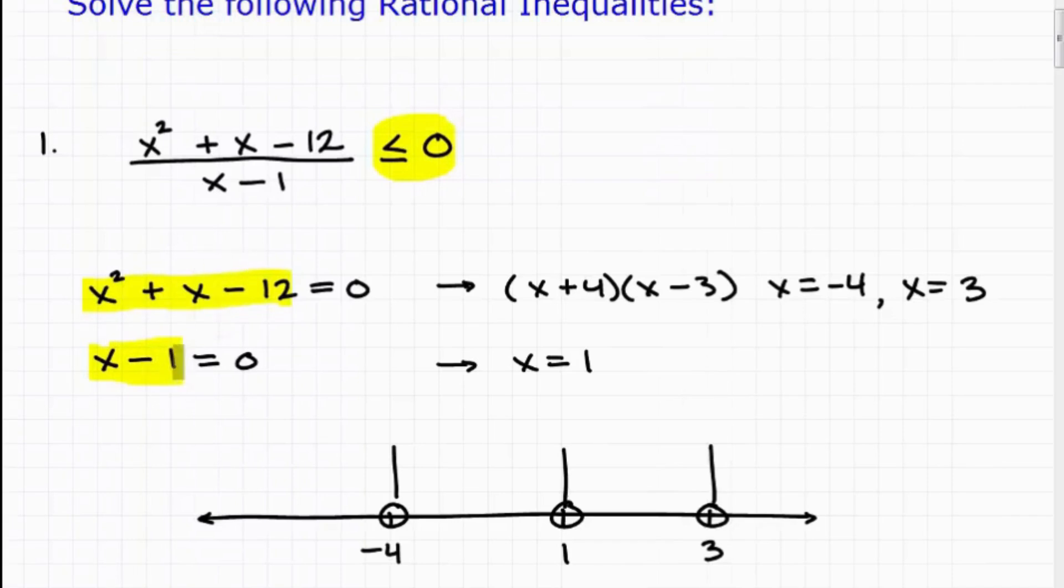Okay, so you've got the numerator, you've got the denominator, we set each equal to 0, and we solve. So the first one here is pretty straightforward, it's a quadratic, you can easily solve this by factoring. And then you have your solutions right here, x equals negative 4 and x equals 3. And then the denominator, x minus 1, obviously is very easy to solve, it's just x equals 1.